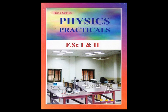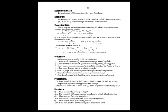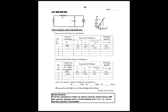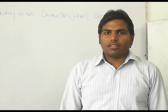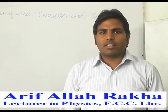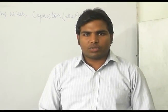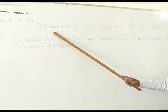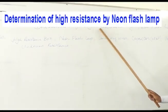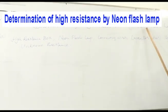You can download freely this practical notebook from my website. Experiment 22, Part B in the practical notebook, left side page. Hello students, today we are going to perform experiment number 22: determination of high resistance by Neon flash lamp.